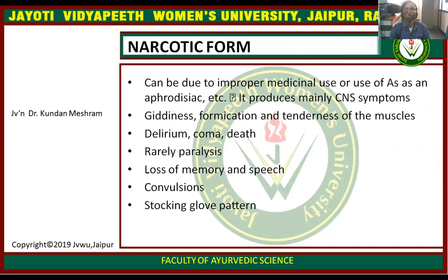Narcotic form: this can occur due to improper medical use or use of arsenic as an aphrodisiac. It produces mainly CNS symptoms including dizziness, formication, and tenderness of muscles. Delirium, coma, and death are also included in the narcotic symptoms. Rarely, paralytic loss of memory, sleep disturbances, convulsions, and choking glow pattern are also seen.